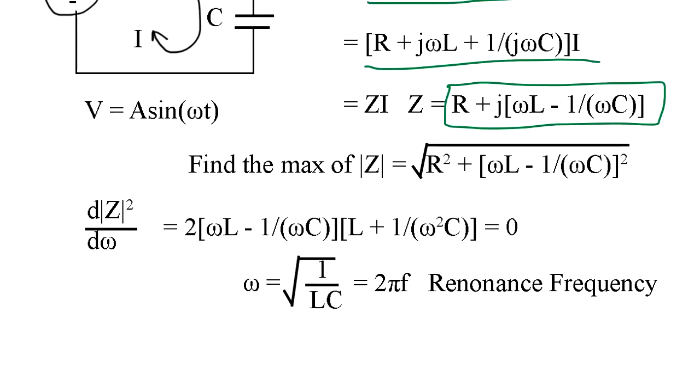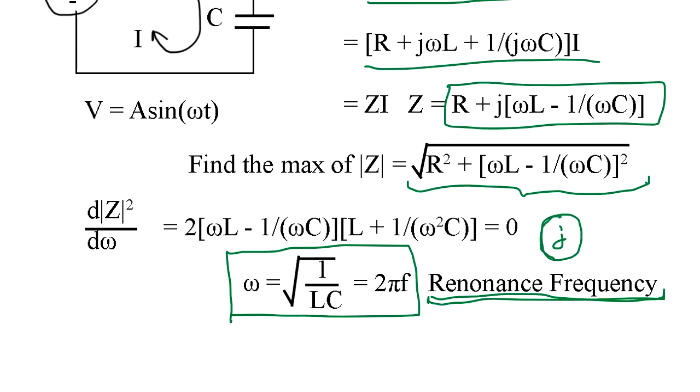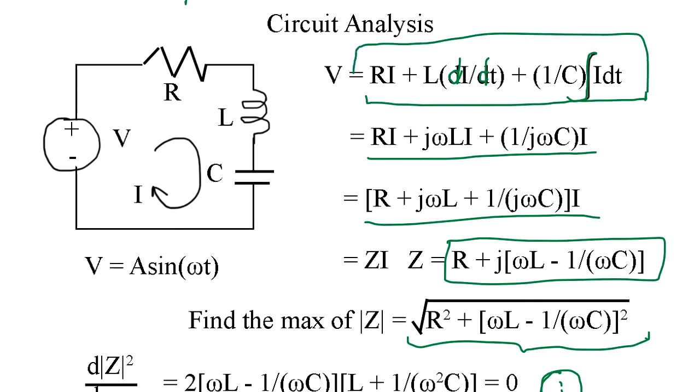For example, say you want to find the max of absolute value of Z. That means when the impedance becomes highest value. Absolute value of Z is given by this. You take a derivative by omega. Then you can easily get this equation. This is resonance frequency. So this kind of analysis can be done easily with just j. It's a magical imaginary number. So we don't have to go through the math we use in the physics.